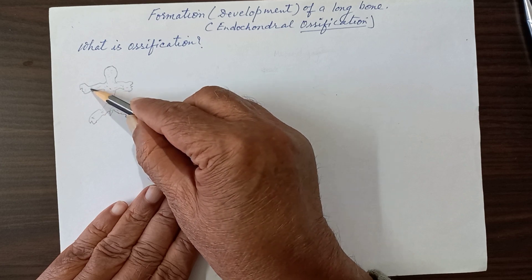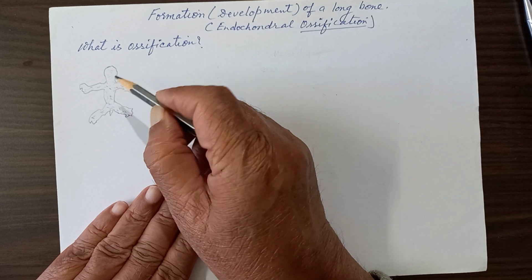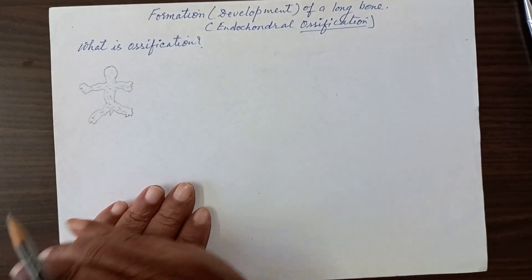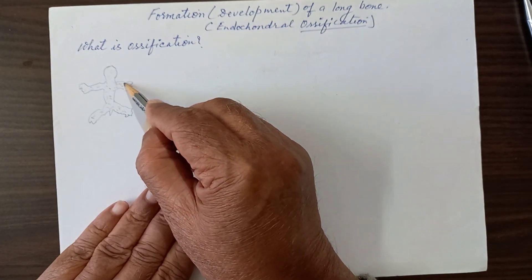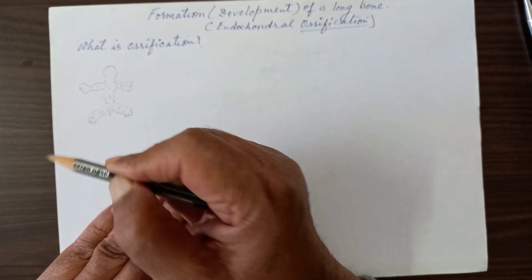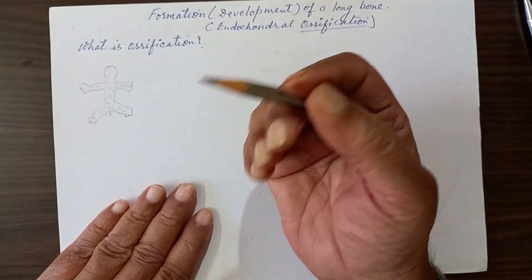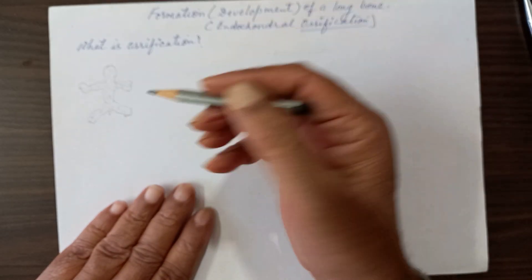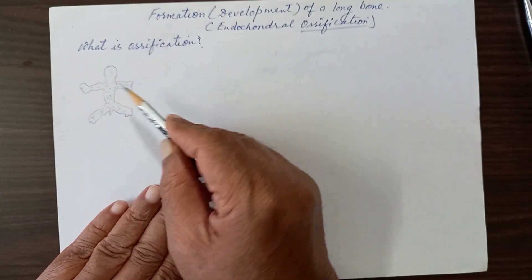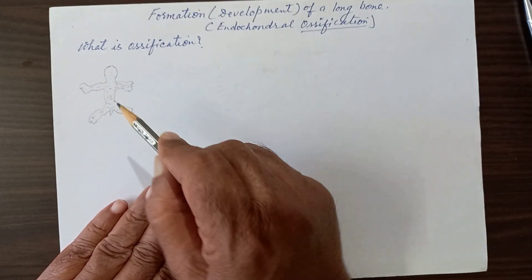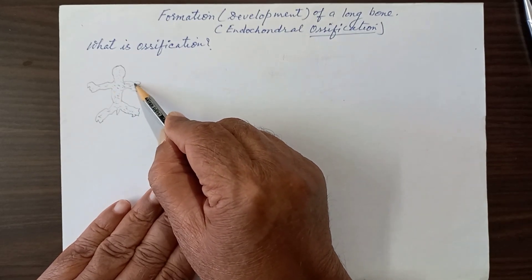The mesoderm forms the core of most of the upper limb. Mesenchyme are the fetal or embryonic connective tissue, responsible for formation of muscles, connective tissue, bones, cartilage, most of the blood vessels, and so on. The endoderm is responsible for formation of parts of the gastrointestinal tract. We are concentrating on this mesenchyme.